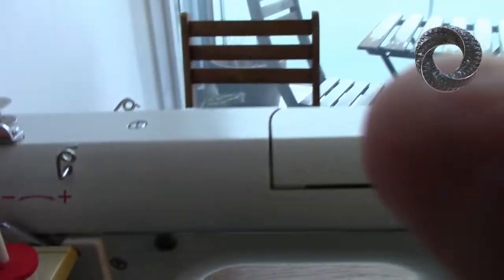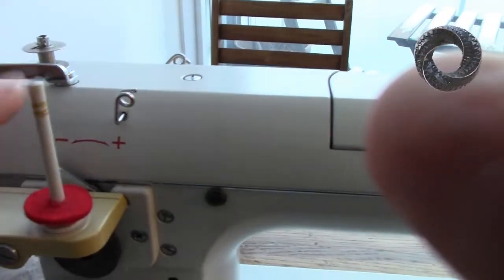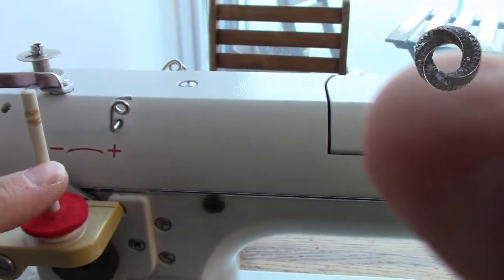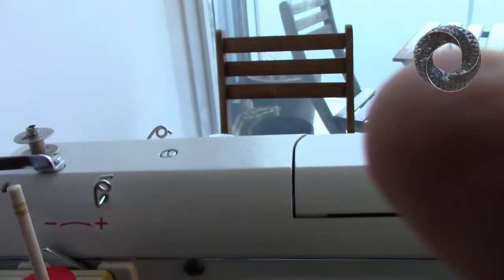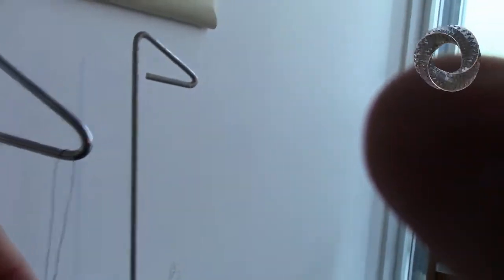So I received a question on how to thread the Janome 672. If you have a spool there, you just put the spool and put the thread through here. In this case, I'm using a tall spool.